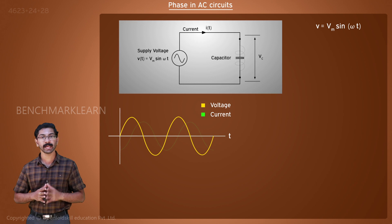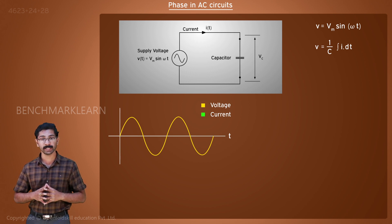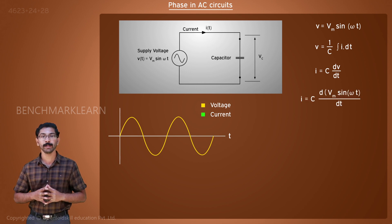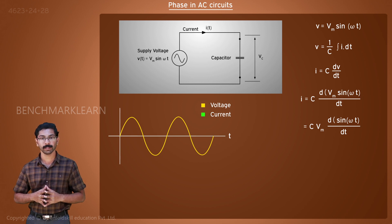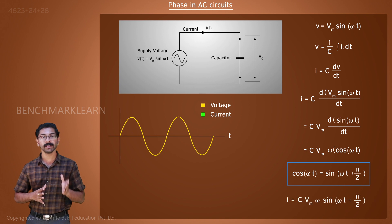Now, let us remove the inductor and connect a capacitor across the AC voltage source. The current through the capacitor is given by V equal to 1 by C into integral I dot dt. We can rearrange and write the expression for current as I equal to C into dV by dt. For the sinusoidal voltage input, the expression for current becomes I equal to C into d by dt of Vm sin omega t, which is equal to C into Vm into omega into cos omega t. Using the trigonometric identity cos omega t is equal to sin omega t plus pi by 2, we can write I is equal to C into Vm into omega into sin of omega t plus pi by 2.